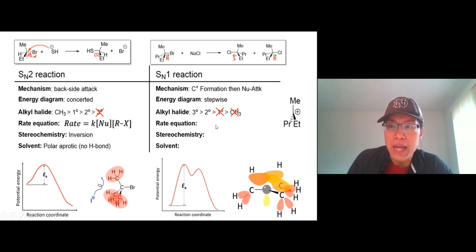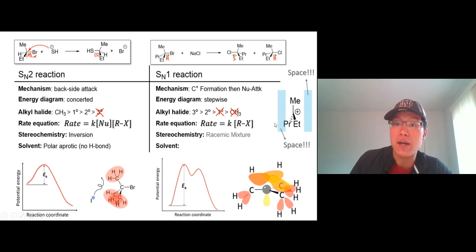The rate equation is unimolecular reaction - depends on the concentration of only one species, the alkyl halide, which comes from the carbocation. Since we have a carbocation, the stereochemistry of the product is a racemic mixture because the nucleophile can attack from back and front side.